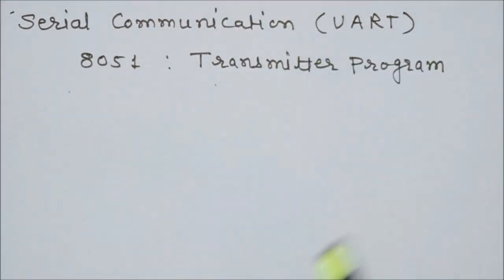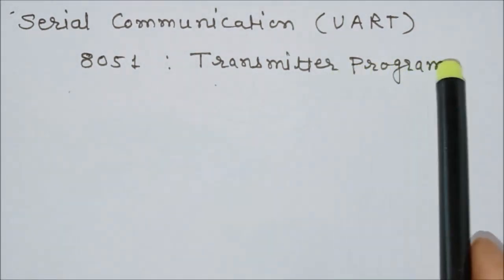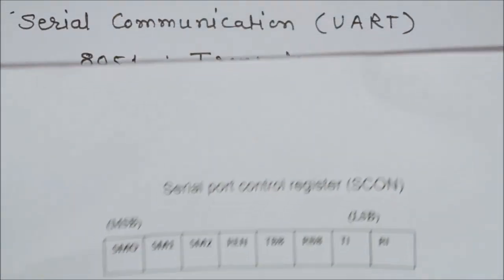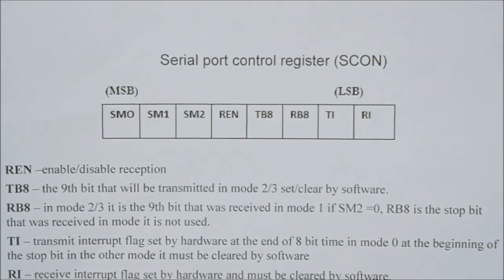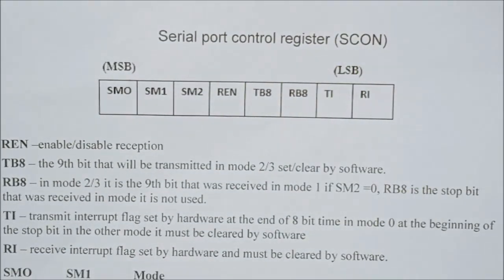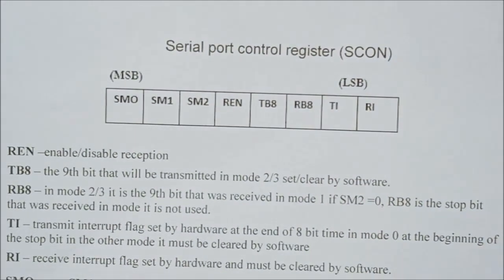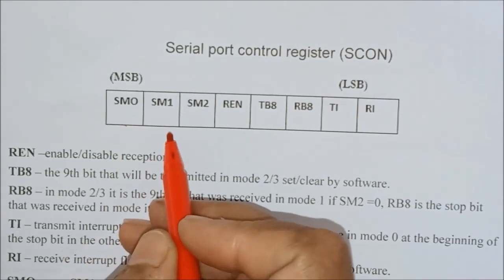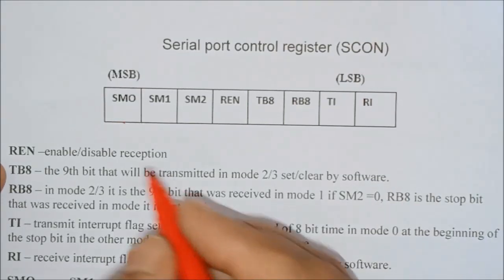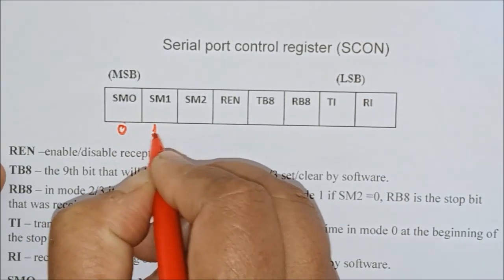This is a serial communication program for transmitting a string using the 8051. The first register required is the serial port control register, that is the SCON register. It is an 8-bit register where the first 2 bits relate to the mode of operation. For this transmitter program, we are going to use mode 1, so these bits should be 0 and 1.